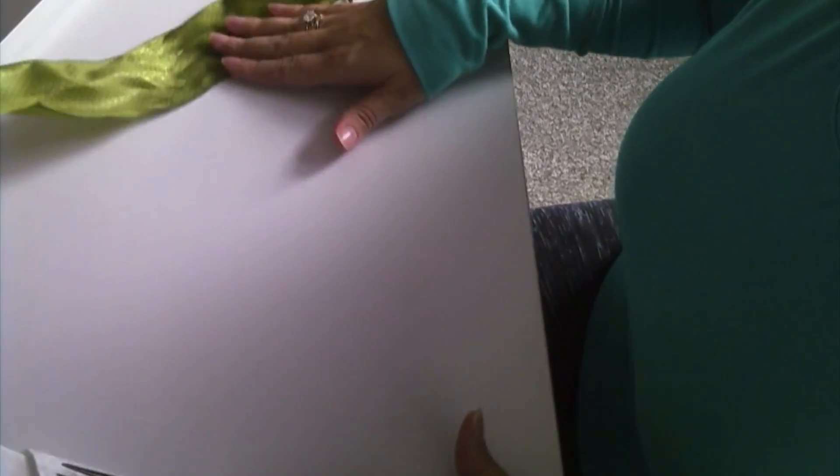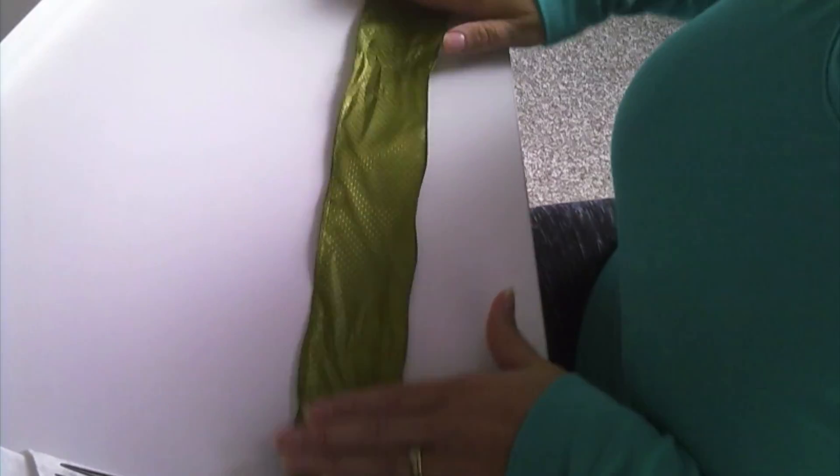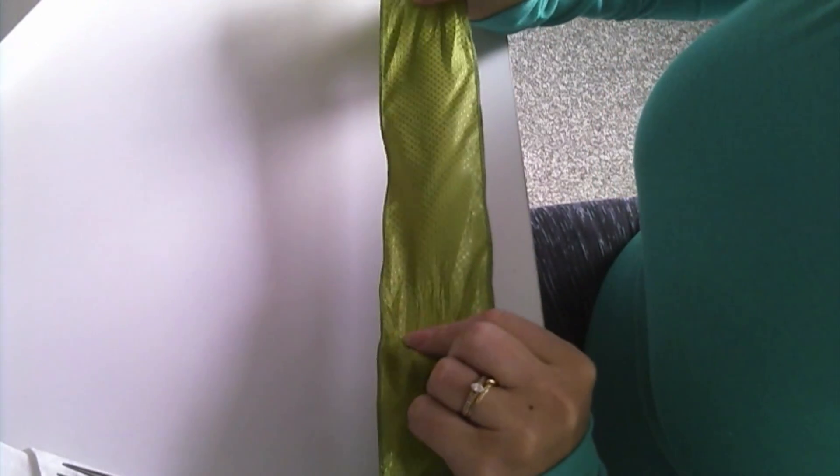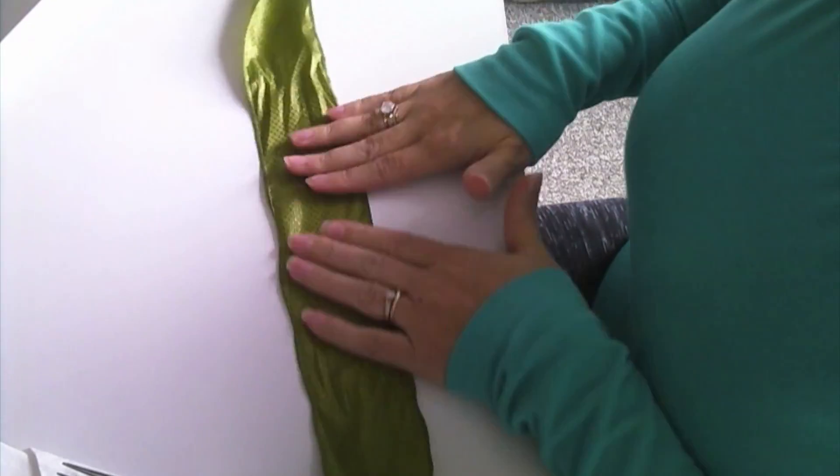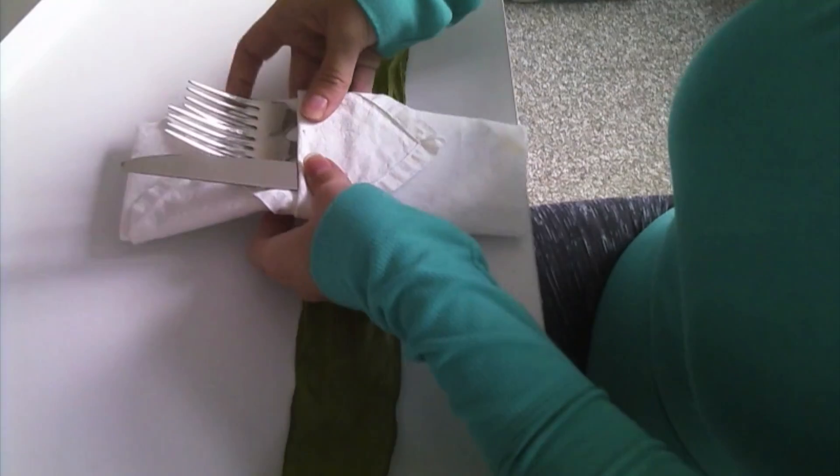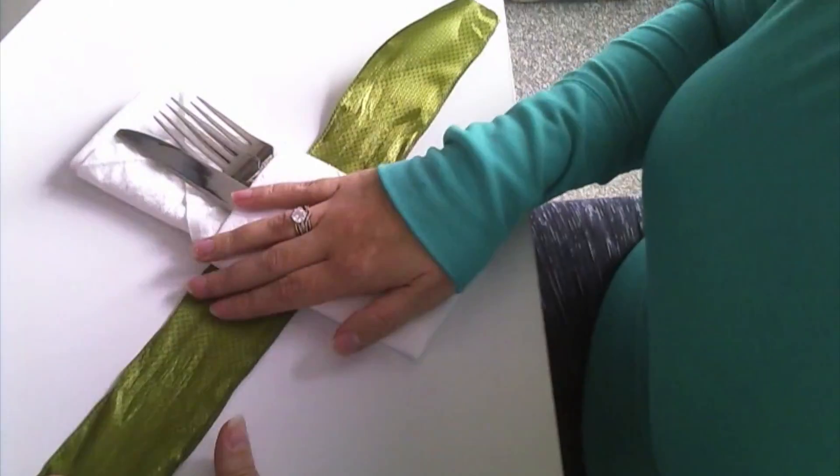Then I'm going to take my ribbon and lay it out so that the back side of the ribbon is facing up, so the front side or the shiny side is facing out. Then you're just going to take your little place setting that you just folded together and place it in the center of the ribbon just like so.